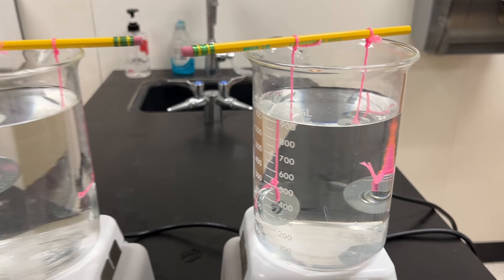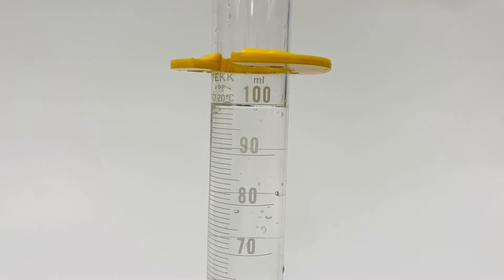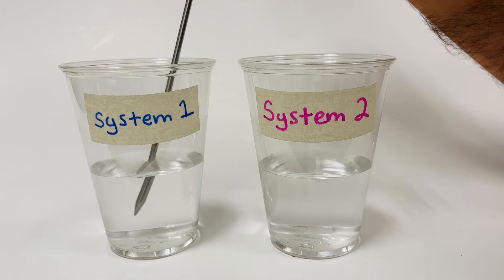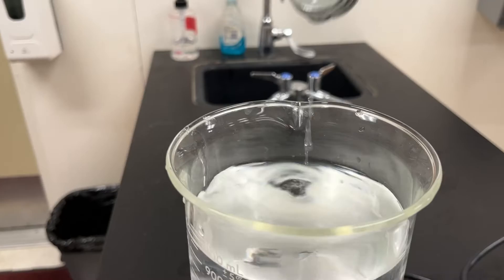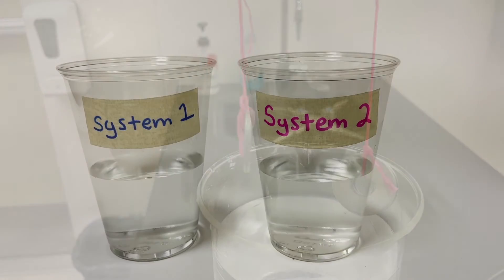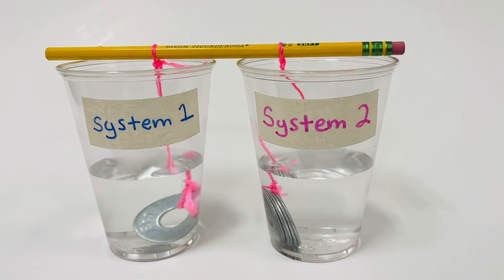For the first experiment we're going to use the same amount of water in each of the two systems. So system one and system two have a hundred milliliters of water. Take the initial temperature and then place two washers in one system and six in the other, and see how that affects the final temperature.